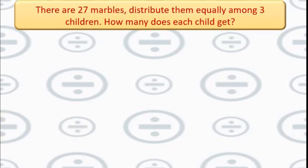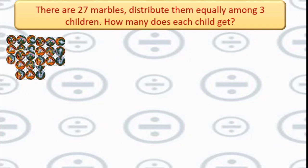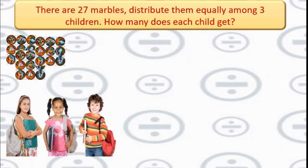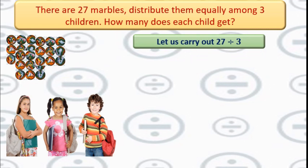There are 27 marbles. Distribute them equally among 3 children. How many does each child get? We have 27 marbles and 3 children. Remember, division always means equal distribution. We will carry out 27 divided by 3 — total number of marbles divided by total number of children.